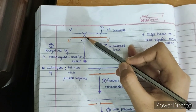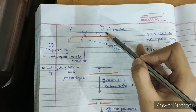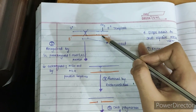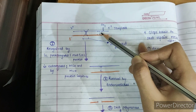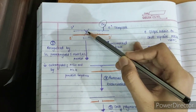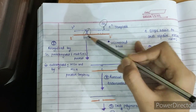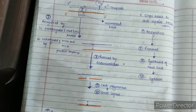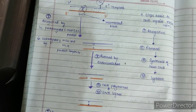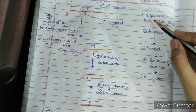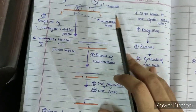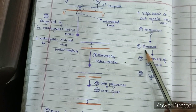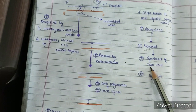Mismatch repair corrects base mismatches. Suppose on the template strand — shown in blue — there is thymine, but on the daughter strand — shown in orange — there is cytosine. That is a base mismatch and needs to be corrected. In all 5 types of repair mechanisms, 4 basic steps are followed: recognition, removal, synthesis of new DNA strand, and ligation.